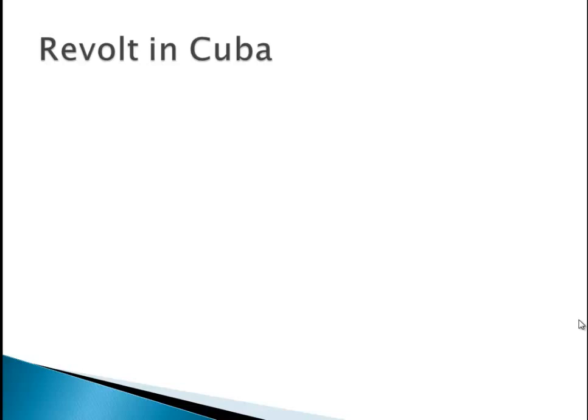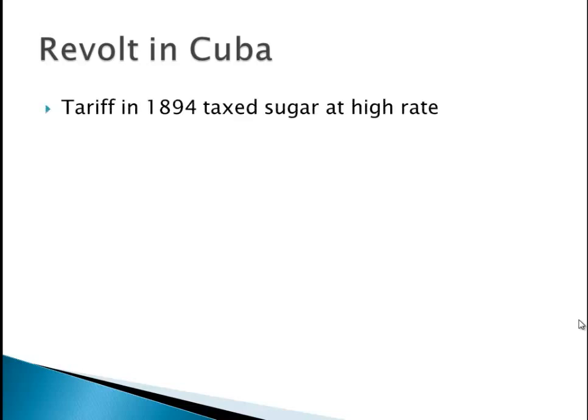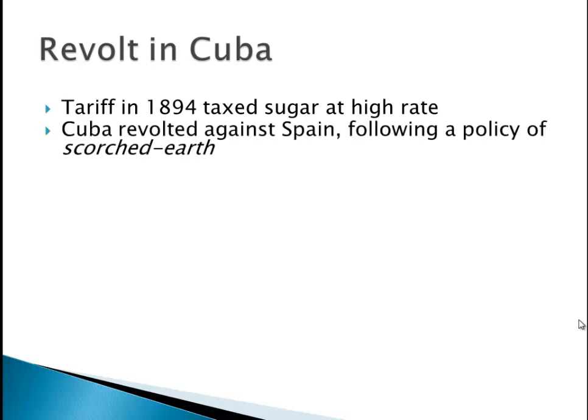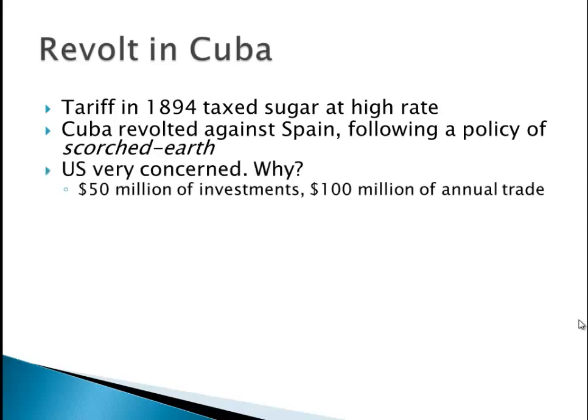We're going to focus on Cuba, which is 90 miles off the shore of Florida. There was a tariff in 1894 that taxed sugar at a very high rate. Cuba revolted against Spain — Spain was in control of Cuba at this time — and the Cubans followed a policy of scorched earth, basically burning everything: sugar plantations, killing animals, destroying everything in an effort to hurt the Spanish. The U.S. was very concerned because they had 50 million dollars worth of investments there and a hundred million dollars worth of annual trade, so they did not like this scorched earth policy.